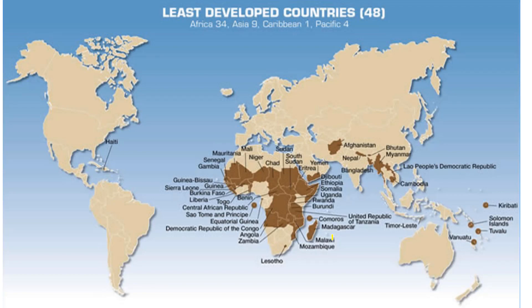The poorest countries in the world are the least developed countries. Poor countries have had a hard time becoming less poor. Since the least developed countries list was developed back in 1968, only five countries have actually graduated from it — showing how difficult it is for them to develop and improve their economic situation.